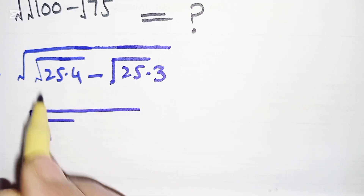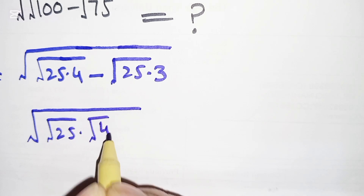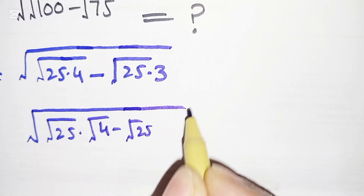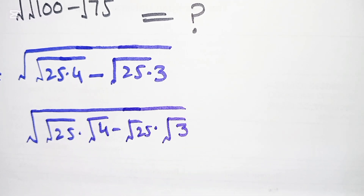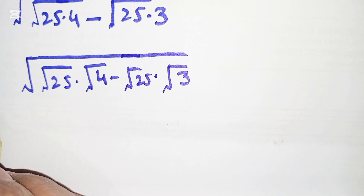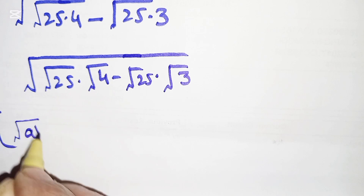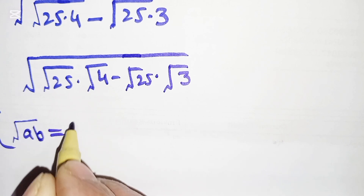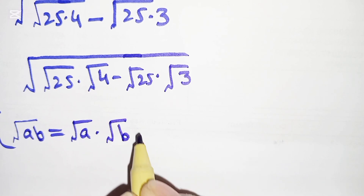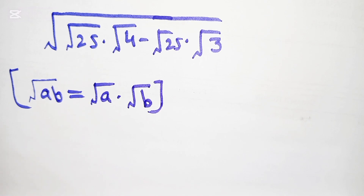We now separate this: √25 times √4, minus √25 times √3. We can solve this with the help of the rule: √(a×b) = √a times √b, and we apply according to this.